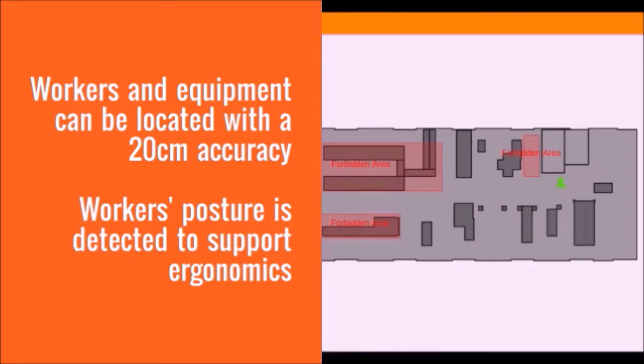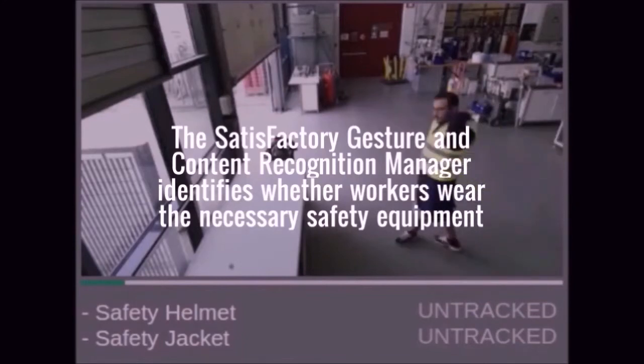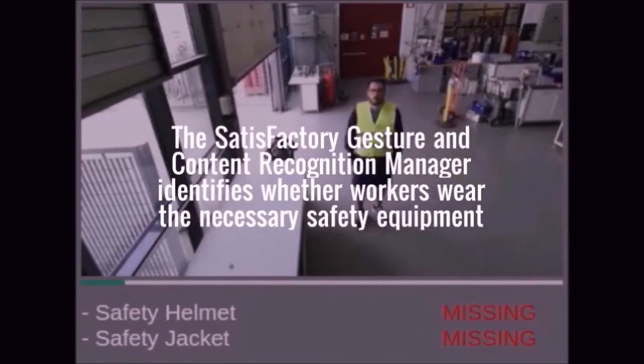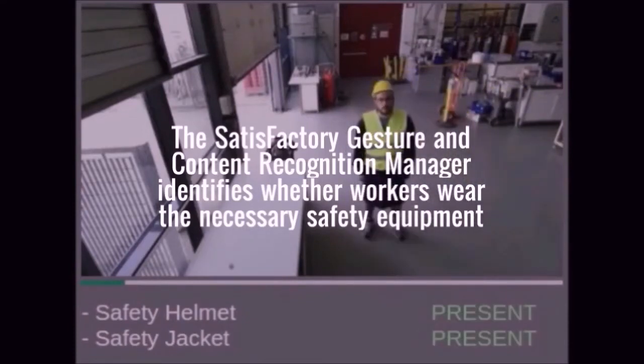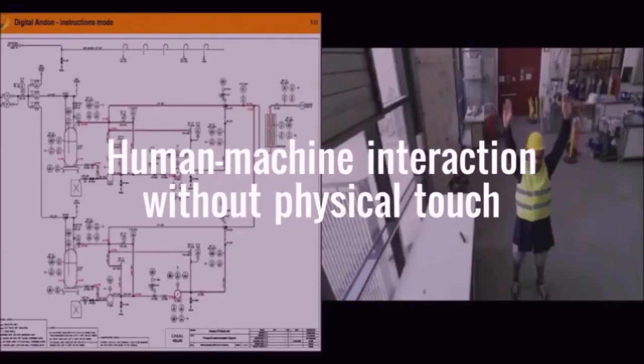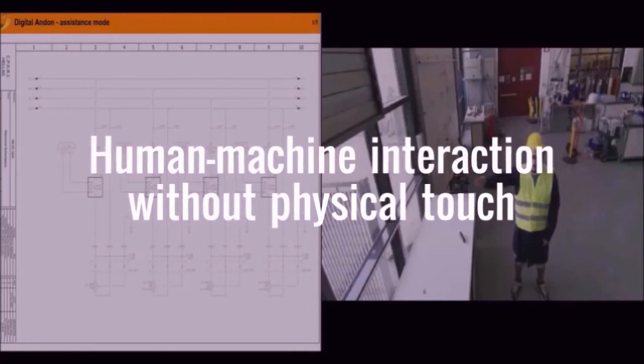In addition, the Satisfactory gesture and content recognition manager identifies whether workers wear their necessary safety equipment, contributing this way to automating safety monitoring. Furthermore, it recognizes workers' movements and triggers respective actions in real-time, allowing human-machine interaction without physical touch.